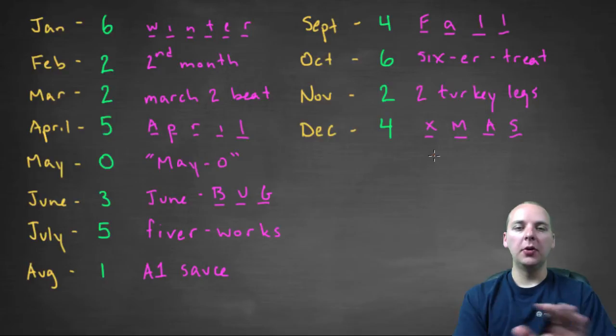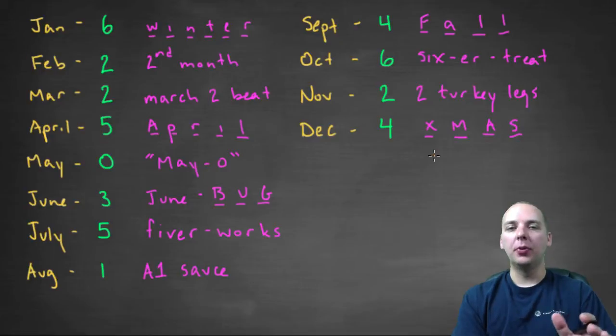So if you can, you can pause the video or look away from the screen, let's quiz ourself a little bit. If I said April, April you would think, oh, that April has 5 letters, so that's the number 5. How about June? That was the June bug mnemonic, bug is 3, so June would be a 3.